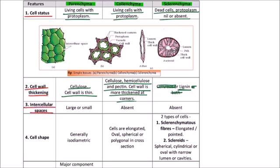Intercellular spaces: these are large or small depending on the type of parenchyma, absent in collenchyma, and also absent in sclerenchyma. Next is cell shape: the cells are generally isodiametric. The cells are elongated in case of collenchyma, and in cross-section they may appear oval, spherical, or polygonal.